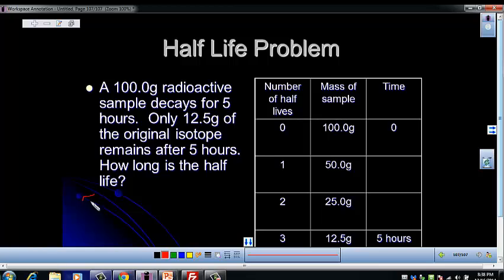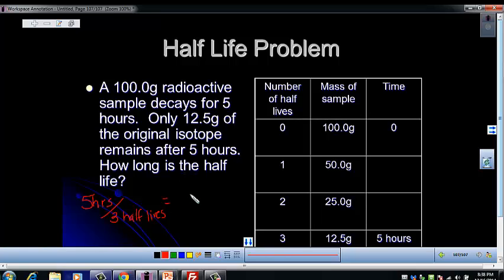We know that we've had 5 hours of time, and we can divide that by the number of half-lives. So there are 5 hours per 3 half-lives, so if you punch this into your calculator, you would get 1.67 hours per half-life. You could actually fill that in, and that would be 1.67, and then this would be 3.33 for the time that passed, and then the 5 hours would work. That's one type of problem. Let's look at another one.